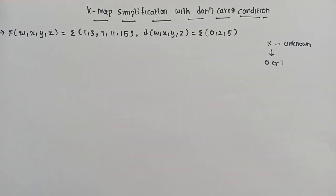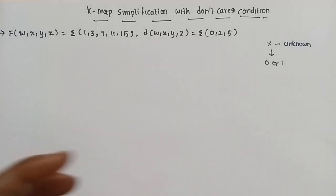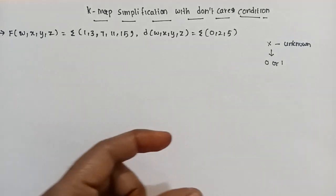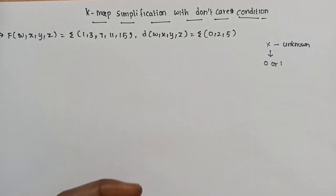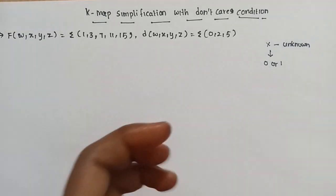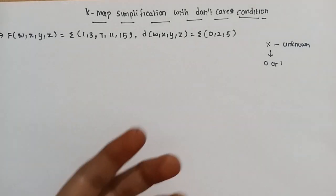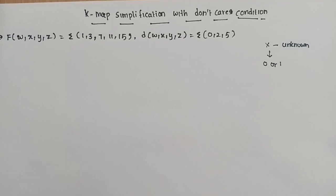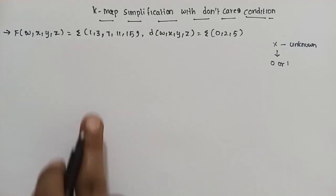The unknown values from K-map simplification — min terms and max terms — are handled in K-map simplification. We will do a 4-variable K-map, and the 4 variables are coming up.